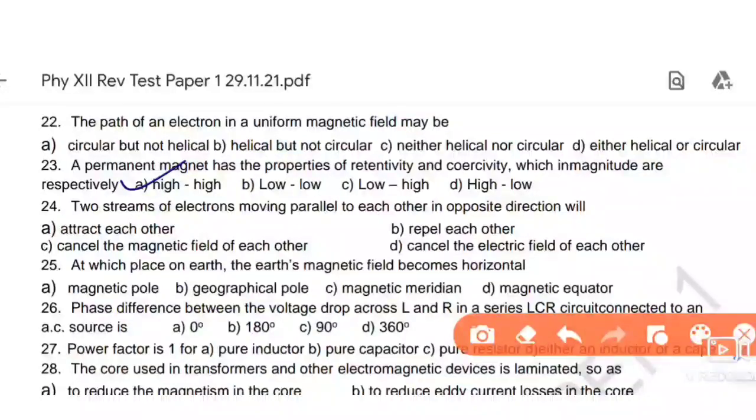Next, the path of an electron in a uniform magnetic field may be. When electron moves in magnetic field, it can move in helical path or circular path. Option number D is the right answer - either helical or circular. Next, a permanent magnet has a property of retentivity and coercivity. Retentivity and coercivity - this question appears in every question paper.